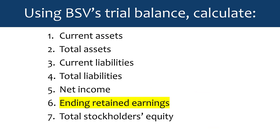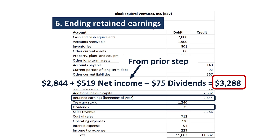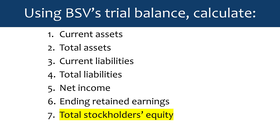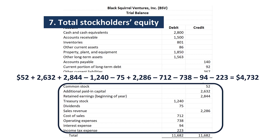We can also calculate ending retained earnings. To do that, we take our beginning retained earnings, add our net income which we just calculated in the prior step, subtract dividends, and we get our ending retained earnings balance. Then next up, we can calculate total stockholders' equity. We're going to add all the stockholders' equity accounts. Even though revenues and expenses are not stockholders' equity accounts, they do end up being closed into retained earnings, so that's why they are added in here.